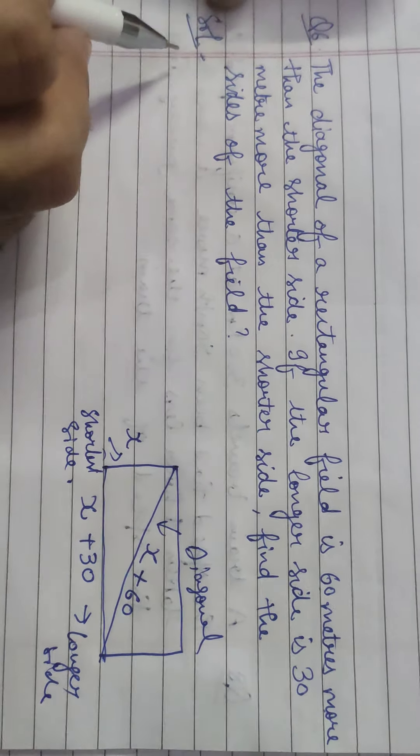According to the given question, had she got 2 marks more in Mathematics, that becomes X plus 2. And 3 marks less in English gives 30 minus X minus 3. The product of these two equals 210.